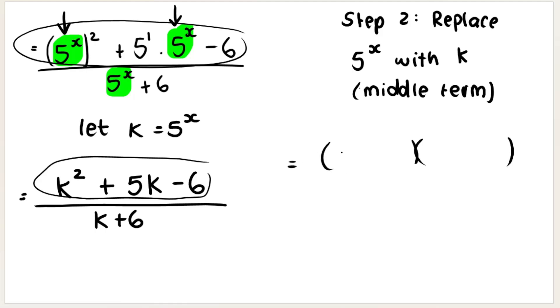K and K, we need to make a minus 6. So it's either going to be 1 times 6, or it's going to be 2 times 3.